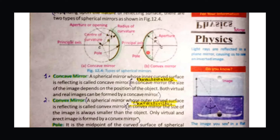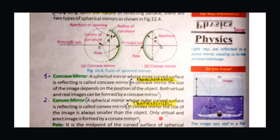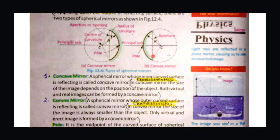For the convex mirror, the outer surface is reflecting. The characteristics of a convex mirror are that you always get a virtual and erect image. Virtual means the image is not real, and erect means it is upright. These are the characteristics and definitions of the concave and convex mirror.